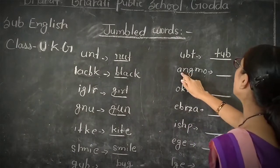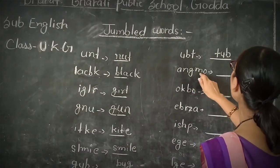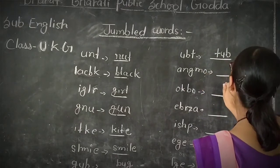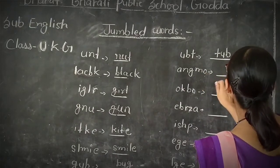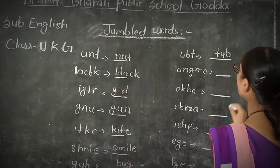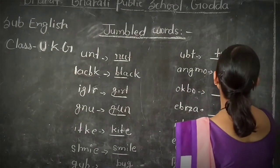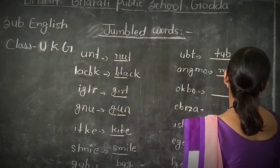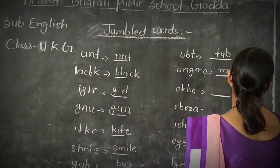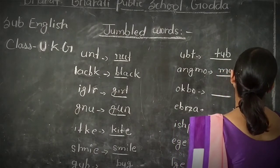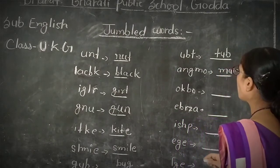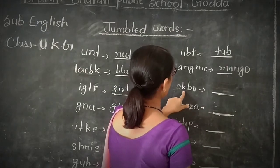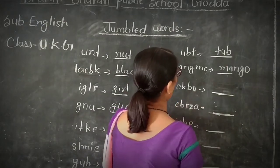A, N, G, O — I am going to write the correct word here: M, A, N, G, O — MANGO. O, K, B, O — I am going to write the correct word: V, double O, K, O — BOOK.